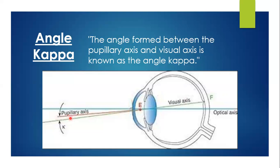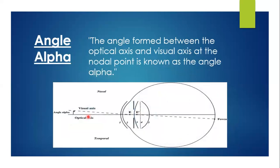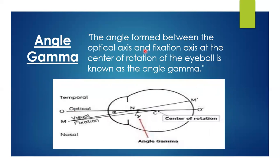Angle Alpha is the angle formed between the optical axis and the real axis. The optical axis passes from the center, and the real axis is the line from the object to the fovea. The angle in the middle of the optical axis and real axis is angle Alpha. Angle Gamma is the angle formed between the optical axis and the fixation axis — the axis joining the object to the center of rotation of the eye. The angle between these two is angle Gamma.